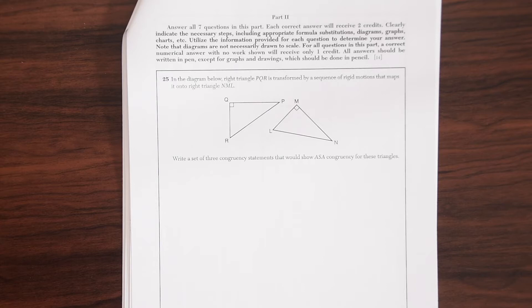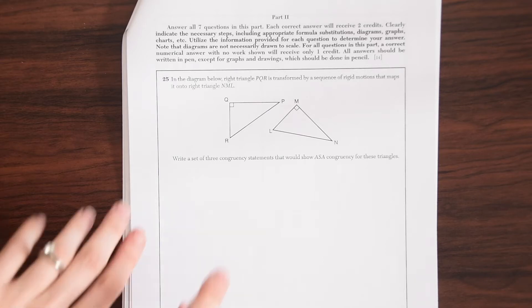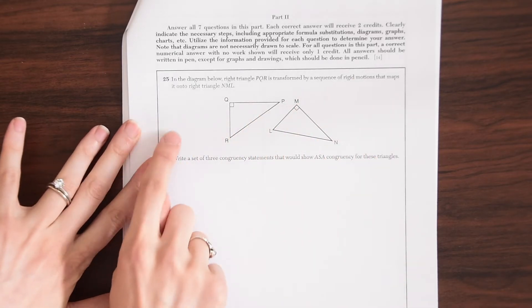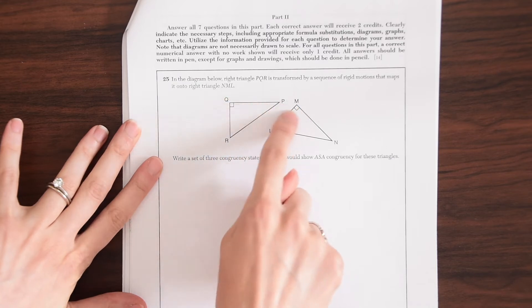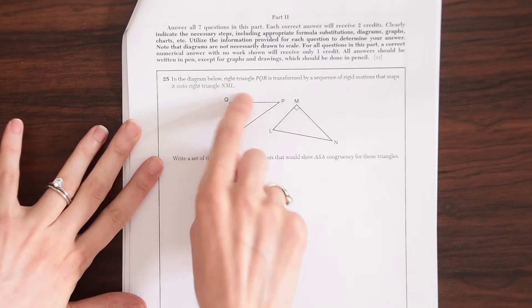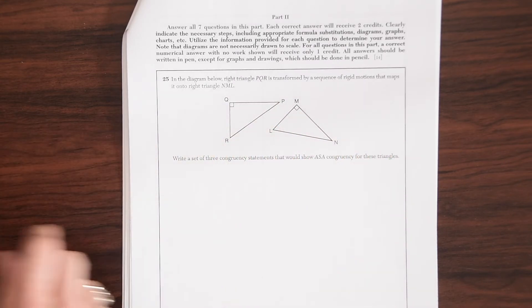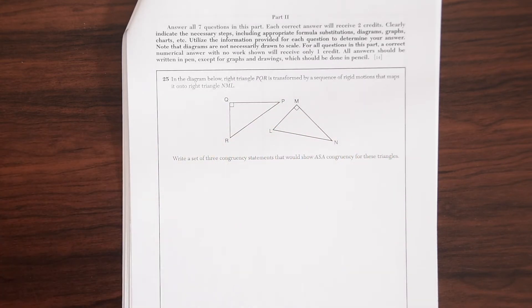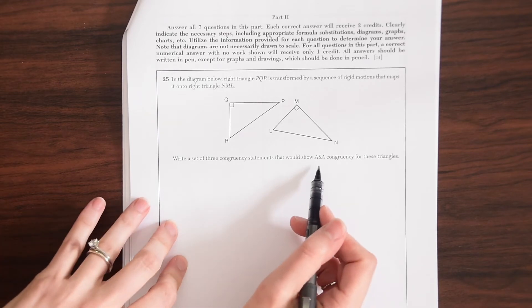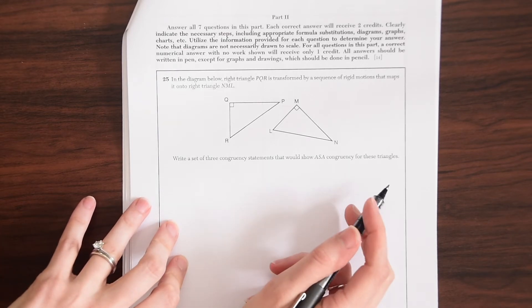In the diagram below, right triangle PQR is transformed by a sequence of rigid motions that maps it onto right triangle NML. So we're going from this triangle and then we transform it - we don't know what we did - and it becomes this triangle over here.